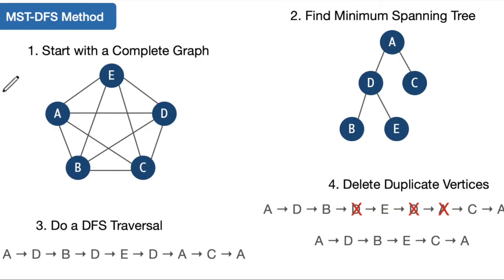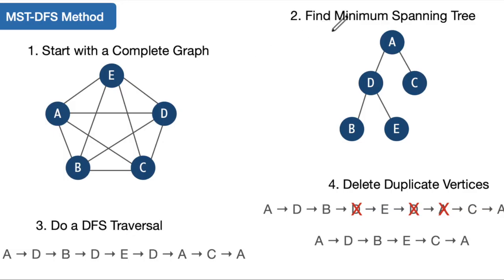We're going to start with a complete graph. Here we have five vertices, and a complete graph has each vertex connected to every other vertex. There are four edges going out of each vertex to each of the other vertices. In a weighted graph, which this would normally be, we would know the weights or distances between each of these vertices — so each edge would have a weight on it.